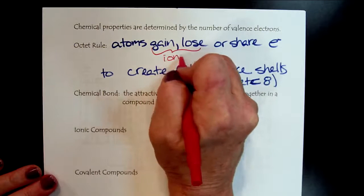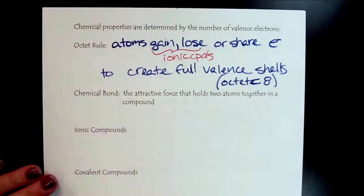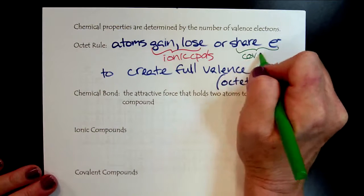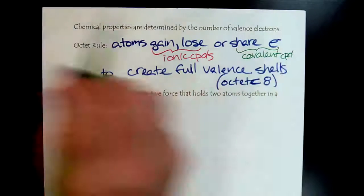So that's our ionic compounds. And then on our next class section, we'll look at covalent compounds and how they share electrons.